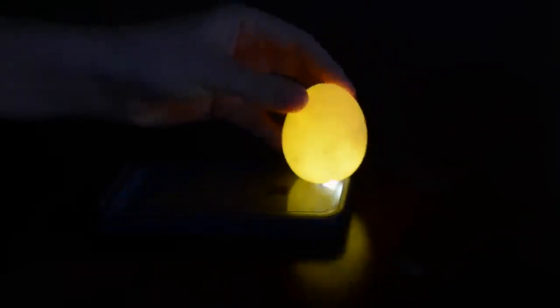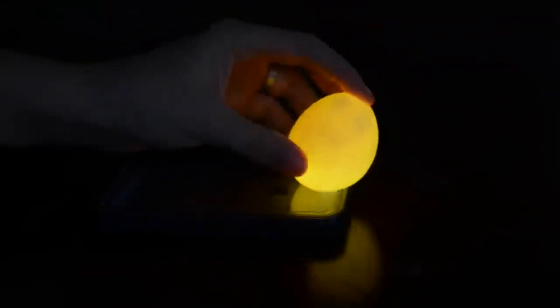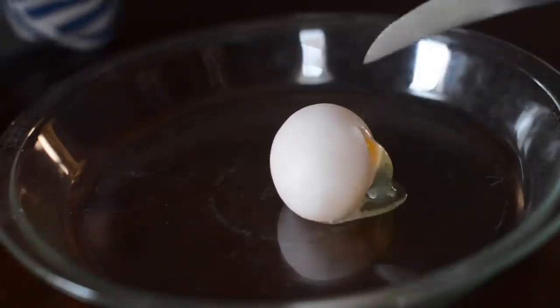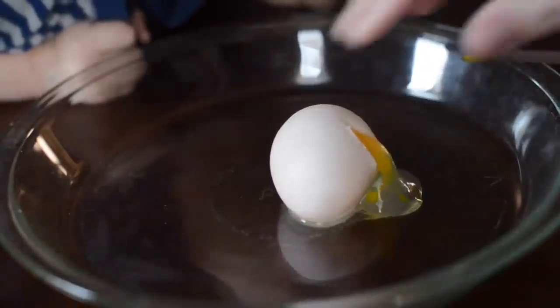There you have a bouncy egg. Now what it really is is the membrane of the egg. You can also shine a light on it for some cool effects. Just to show you that it is a raw egg, and there's the membrane.